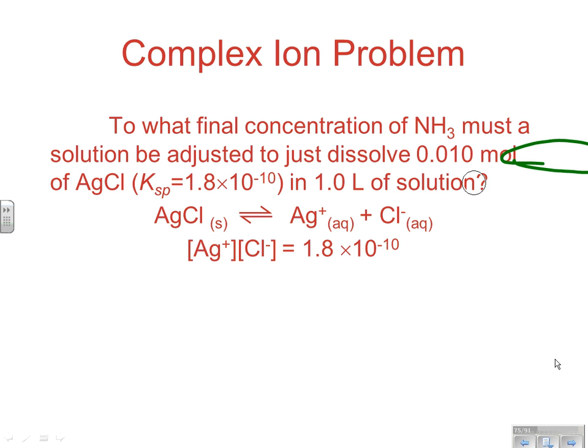Let's take a look at a problem. To what final concentration of NH3 must a solution be adjusted to dissolve 0.01 moles of AgCl in one liter of solution? Since the Ksp of this AgCl dissolving reaction is so low, that means not very much of this stuff actually dissolves. We want to increase the solubility to this amount. We can do that by adding ammonia to form the silver ammonia complex, therefore lowering the concentration of the silver, increasing the concentration of the chloride, and increasing the solubility.